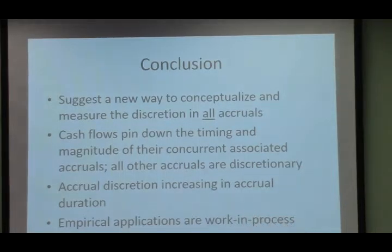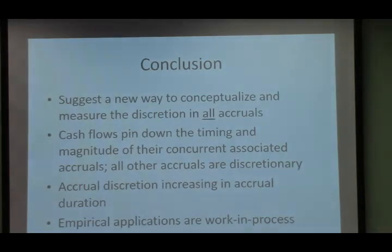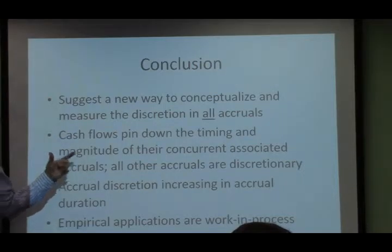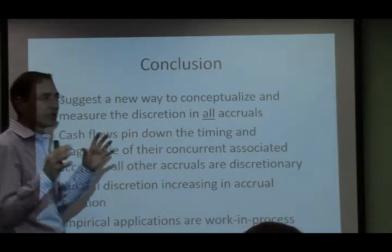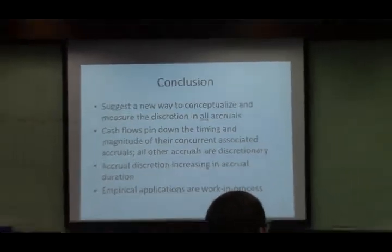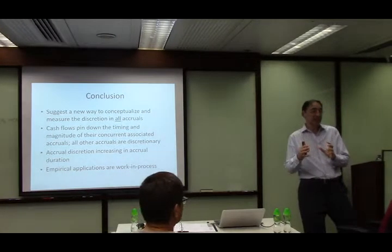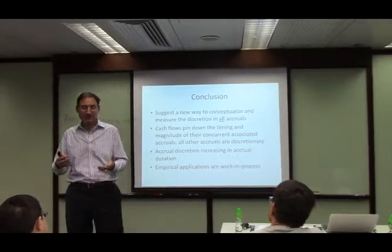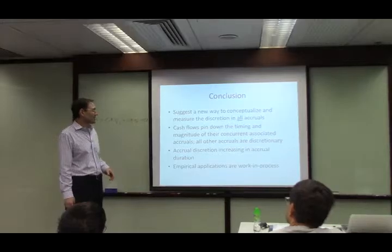Summing up — it's a different way to think about discretion on accruals. Something that came up in other presentations was: what does discretion mean here exactly? All the people think of discretion as the dark discretion — managers tweaking the numbers for nefarious reasons. That's in here, but the notion of discretion here is much broader. It's simply anything that makes the realizations different from estimates. This could be managers tweaking numbers, or simply because the environment is very unpredictable. This notion of discretion is very broad but more precise — at least I know what I mean.